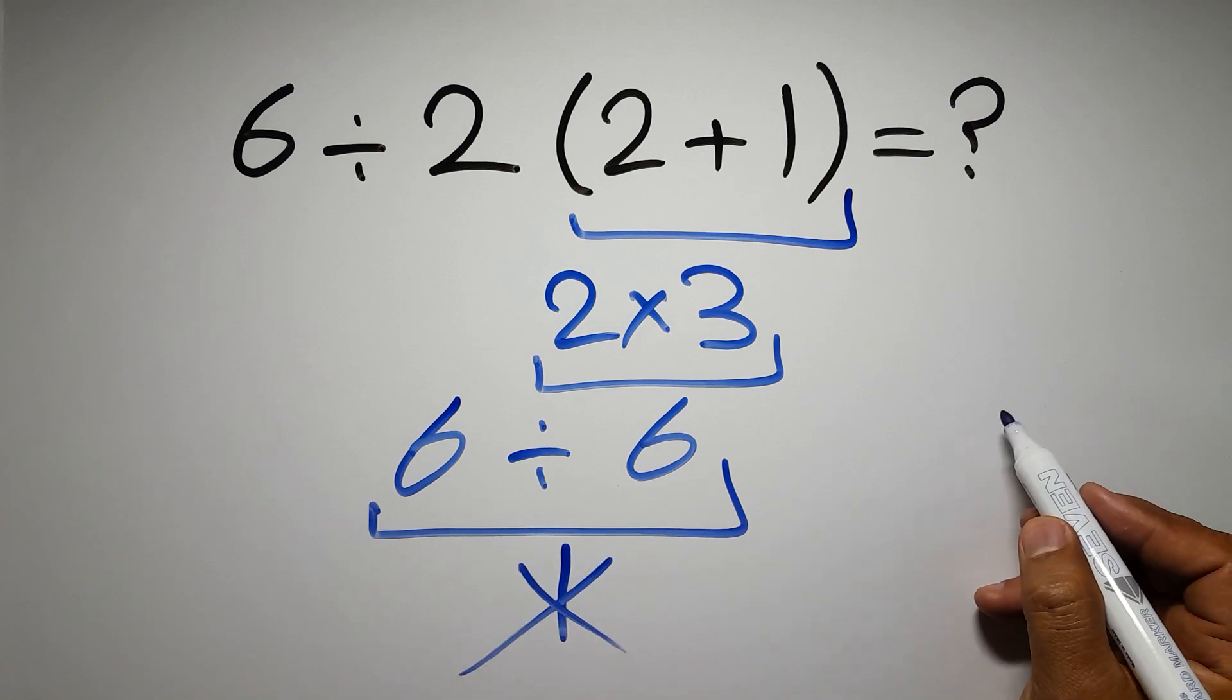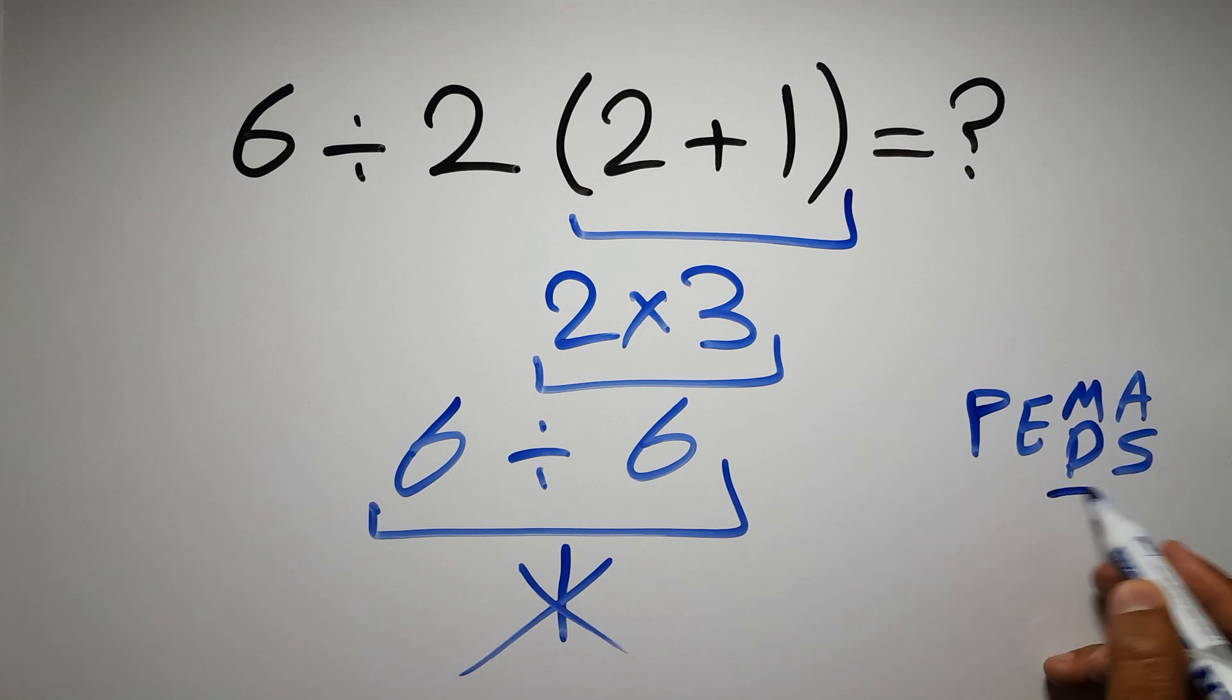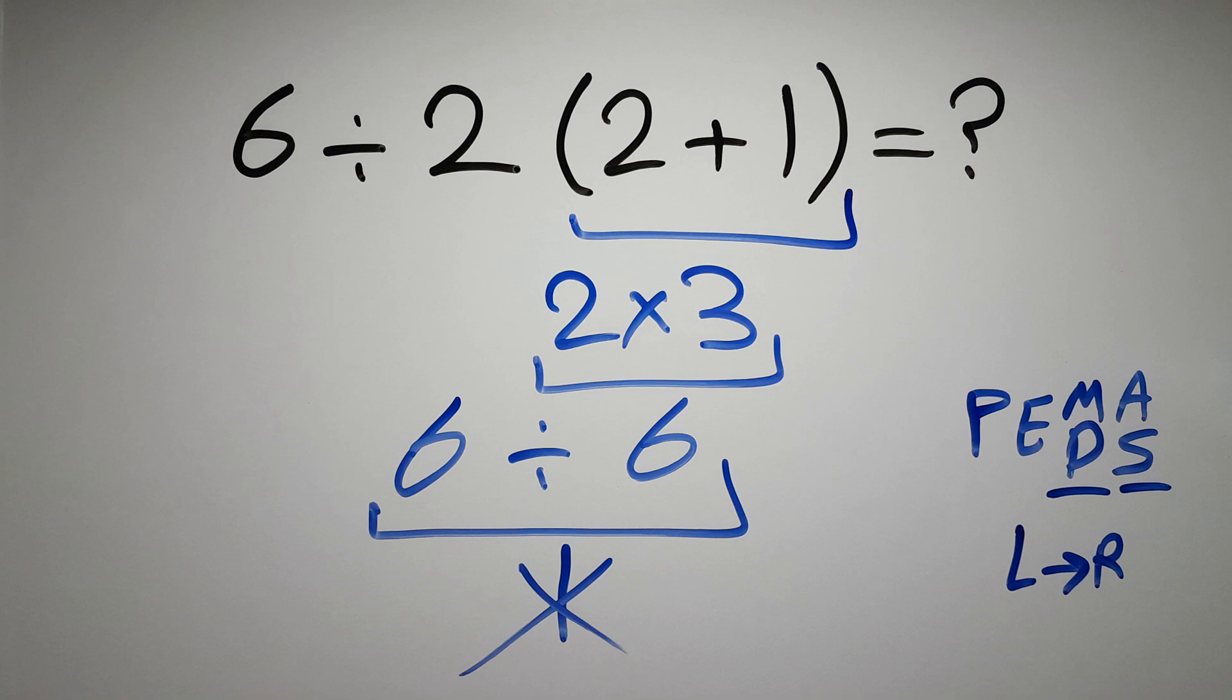According to the order of operations, first we have to do parentheses, then exponents, then multiplication or division, and finally addition or subtraction. Remember that multiplication and division have equal priority, and we have to work from left to right, and the same applies to addition and subtraction.